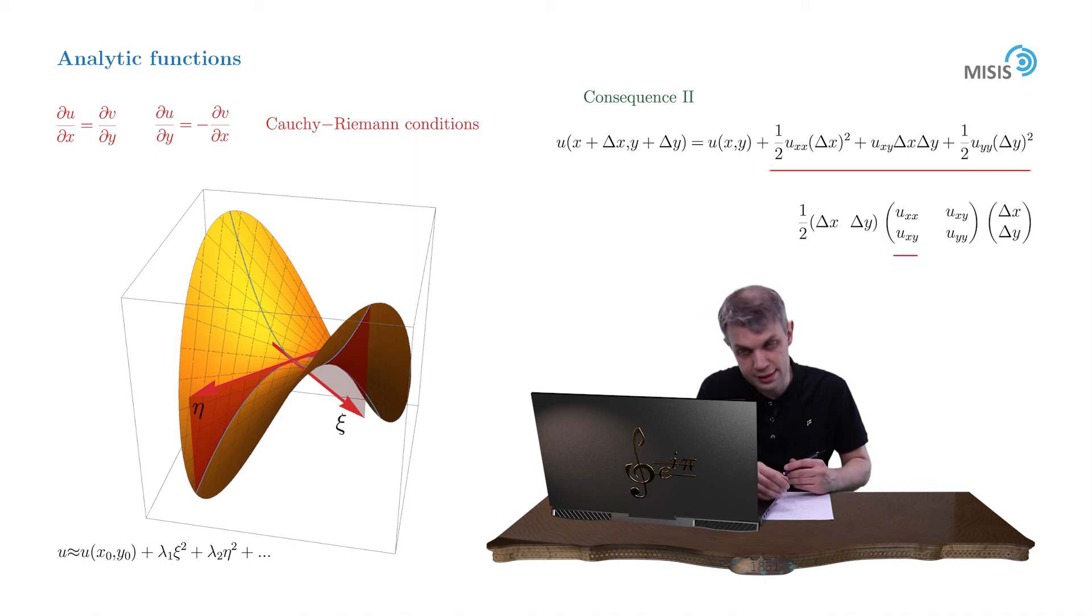So what we obtained here is the so-called Hessian matrix. To see the type of criticality, we need to diagonalize it, and its eigenvalues are precisely the principal curvatures of our function. But we don't actually need to diagonalize it, because what we want to prove is that this point is a saddle. That means the product of its eigenvalues is negative. But the product of eigenvalues is the determinant of the matrix, so we simply write down the determinant and study its properties.